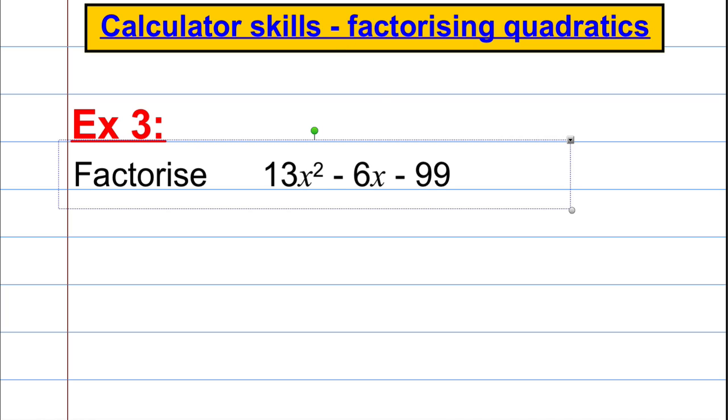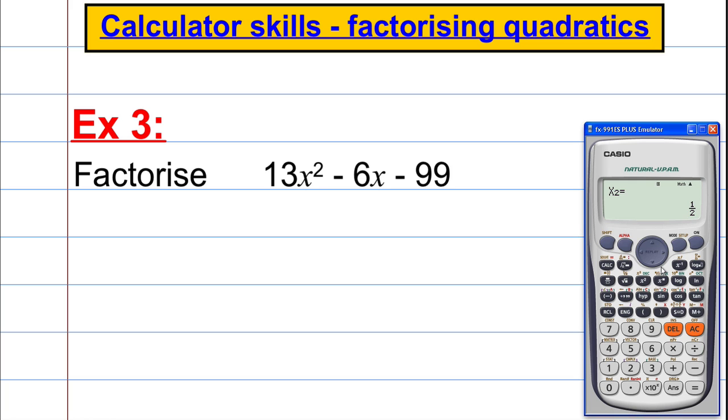I've seen one like this flying around in some books before. We want to factorise that. You've got to think of two numbers that multiply to something massive. Let's try this on the calculator as a check method. We're going to go mode, equation and number 3. Our A is equal to 13, our B is equal to negative 6, and our C is equal to negative 99.